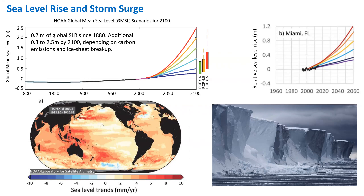Land-based ice sheets don't melt like ice cubes on a plate. They ebb and flow and crack and slide and calve off into the ocean in complicated ways. The physics of those processes is not well represented in climate models, so there's a lot of uncertainty there. Sea level rise also has a lot of regional variability — the global mean shows red positive trends and a few blue spots of sea level decline. Part of this variability is due to changing ocean currents, and partly as land-based ice sheets melt, it changes the gravitational attraction of seawater to those ice sheets, leaving a regional signature.